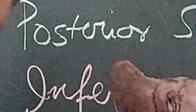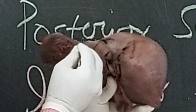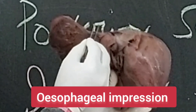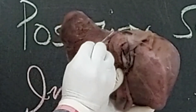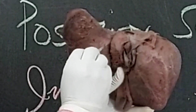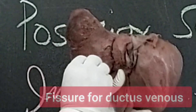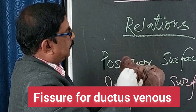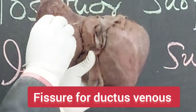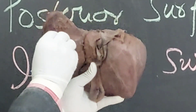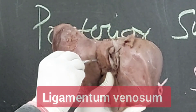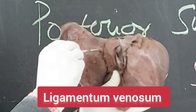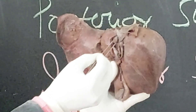Relations are from left to right. This is the esophageal impression — the lower end of esophagus is here. Next to the esophageal impression, here is a fissure. This fissure is the fissure for ductus venosus. That means in fetal life it was ductus venosus, but here I will get the ligamentum venosum. So ligamentum venosum is a remnant of ductus venosus.